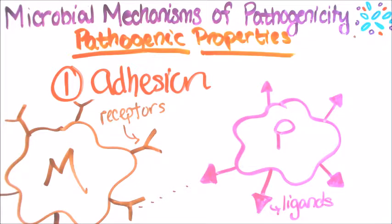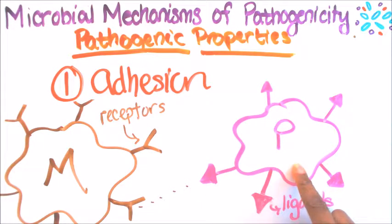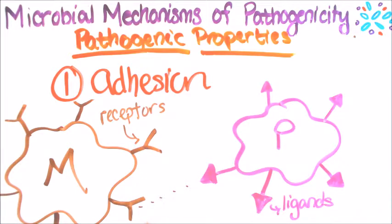In this video we'll be discussing the pathogenic properties. First up is adhesion. Here we have our pathogen, and attached to the pathogen are ligands. These ligands link up with the receptors of the phagocytic cells — and this one is a macrophage.